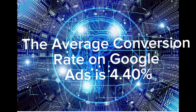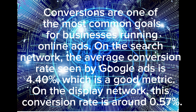The average conversion rate on Google Ads is 4.40%. Conversions are one of the most common goals for businesses running online ads on the search network. The average conversion rate seen by Google Ads is 4.40%, which is a good metric. On the display network, this conversion rate is around 0.57%.